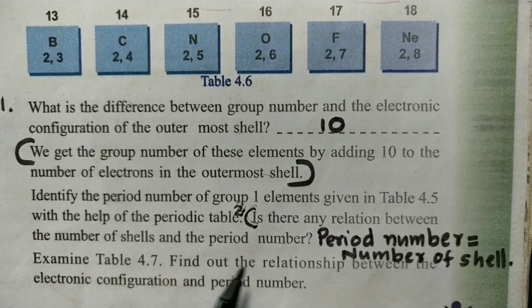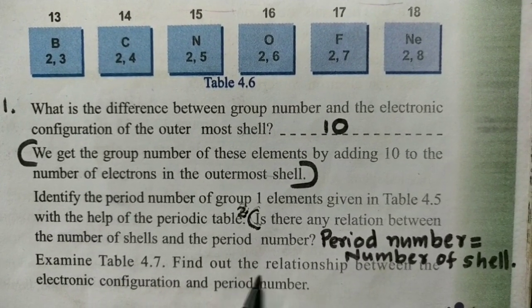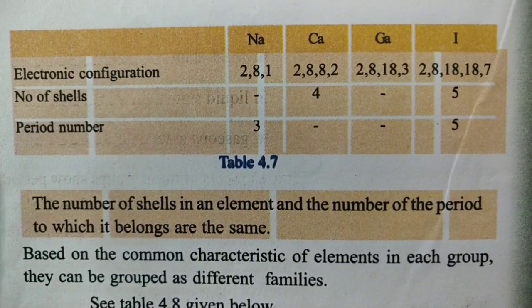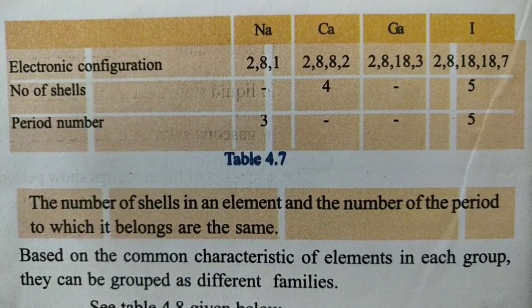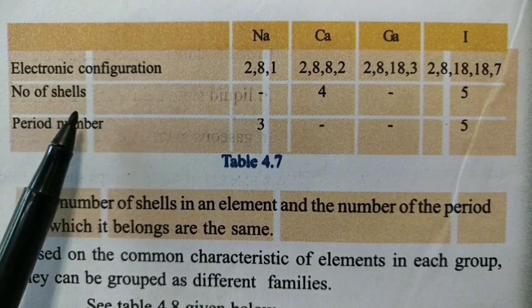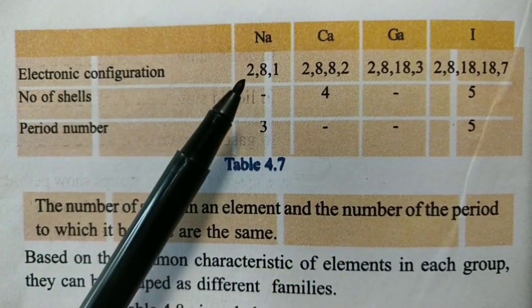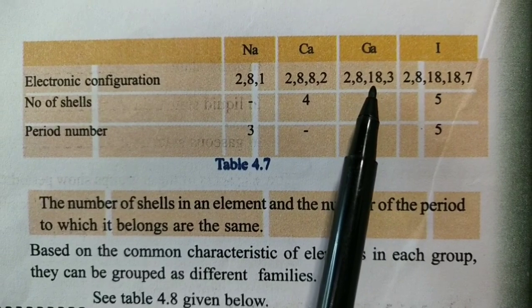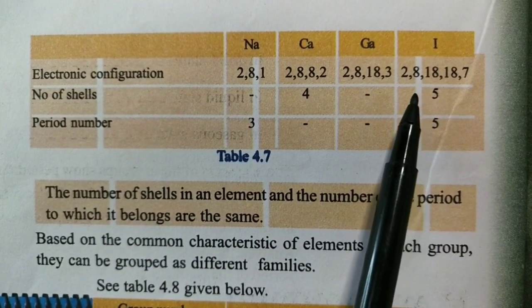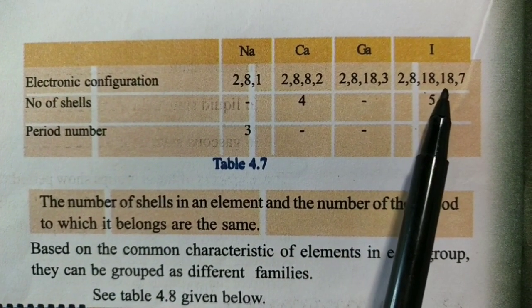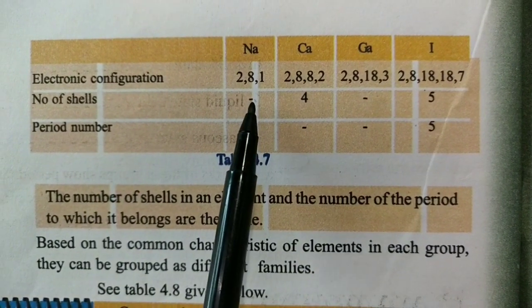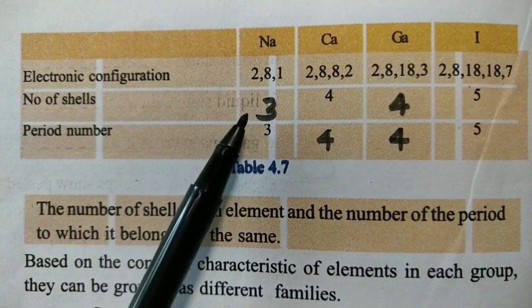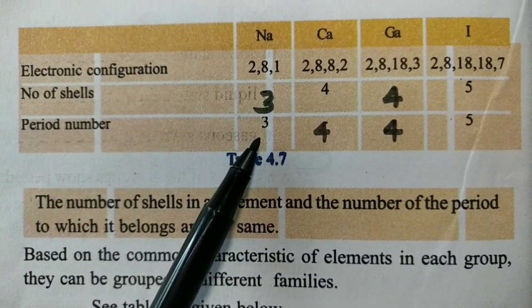What is the relation between number of shells and period number? Period number is equal to number of shells. We will fill this chart in the notebook. The number of shells determines the period number — so the period number and the number of shells in an element are the same.